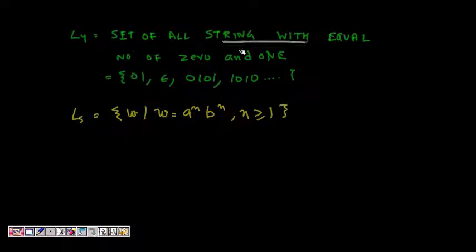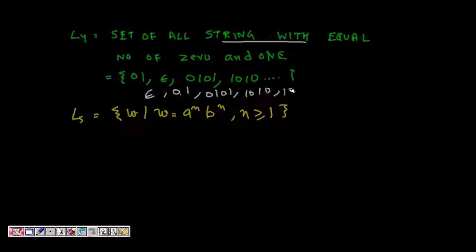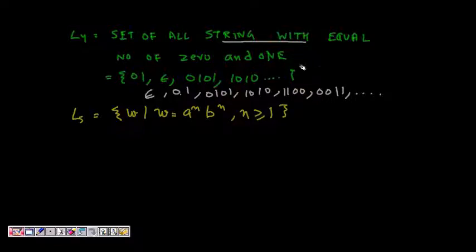L4 is the set of all strings with an equal number of zeros and ones. Epsilon qualifies (zero of each). Then: 01, 10, 0011, 0101, 1001, 1100, and so on. This is also an infinite set.